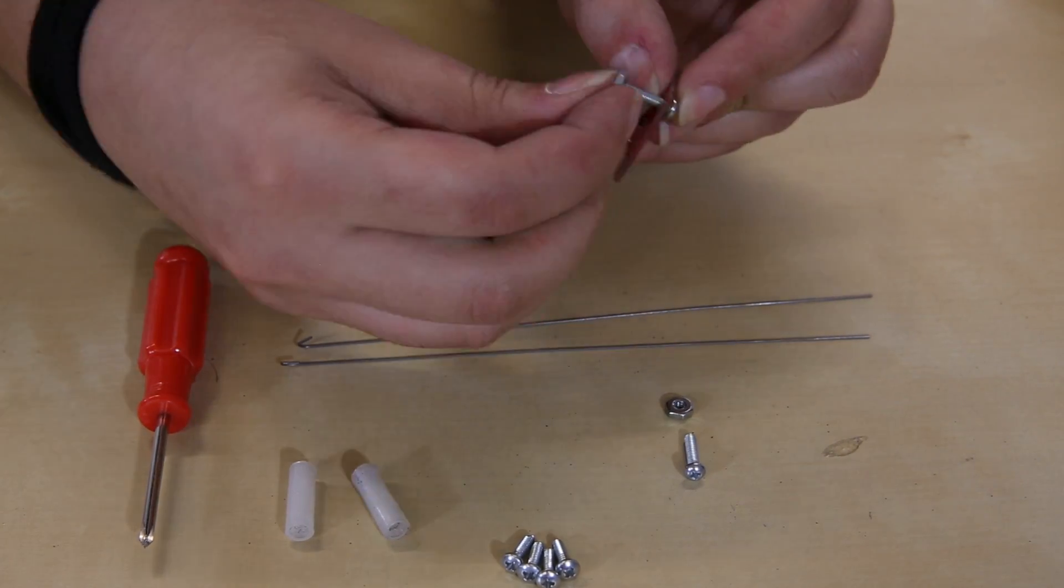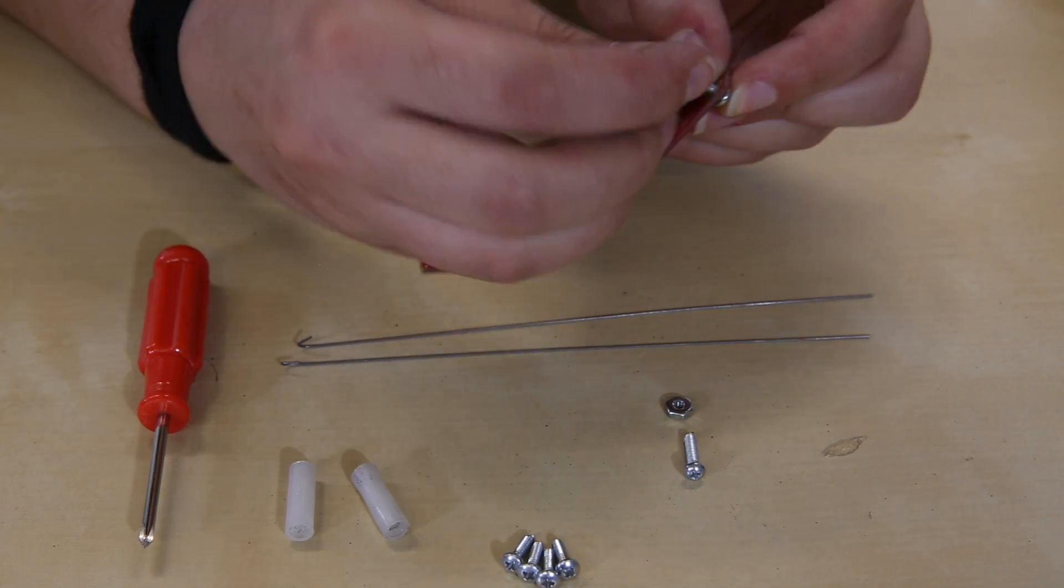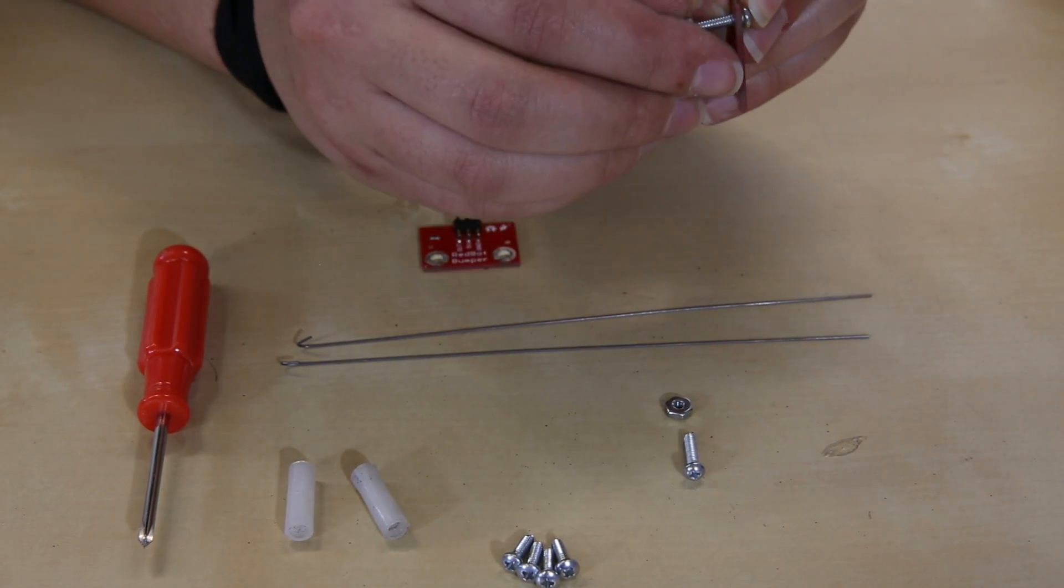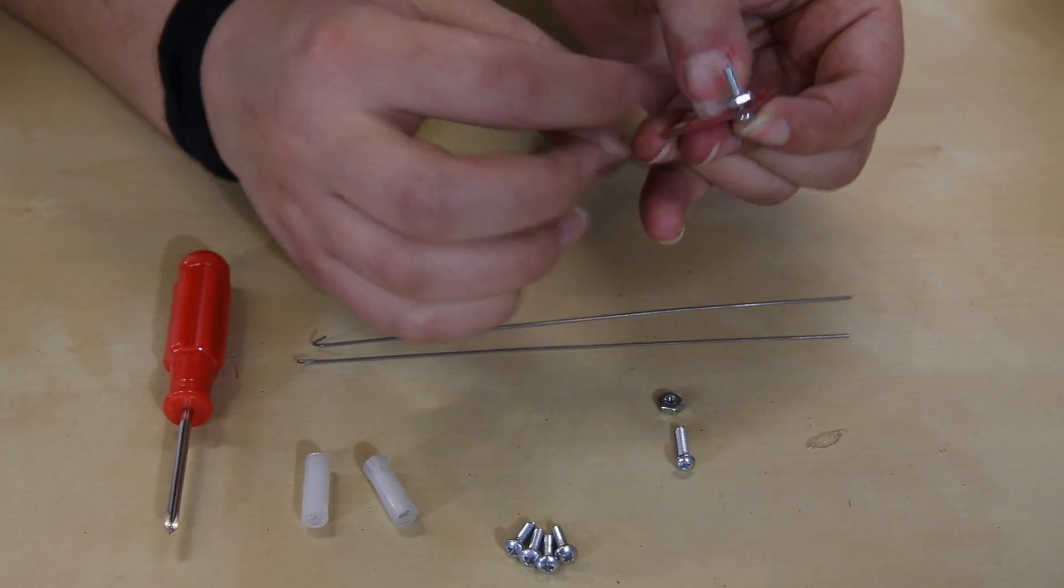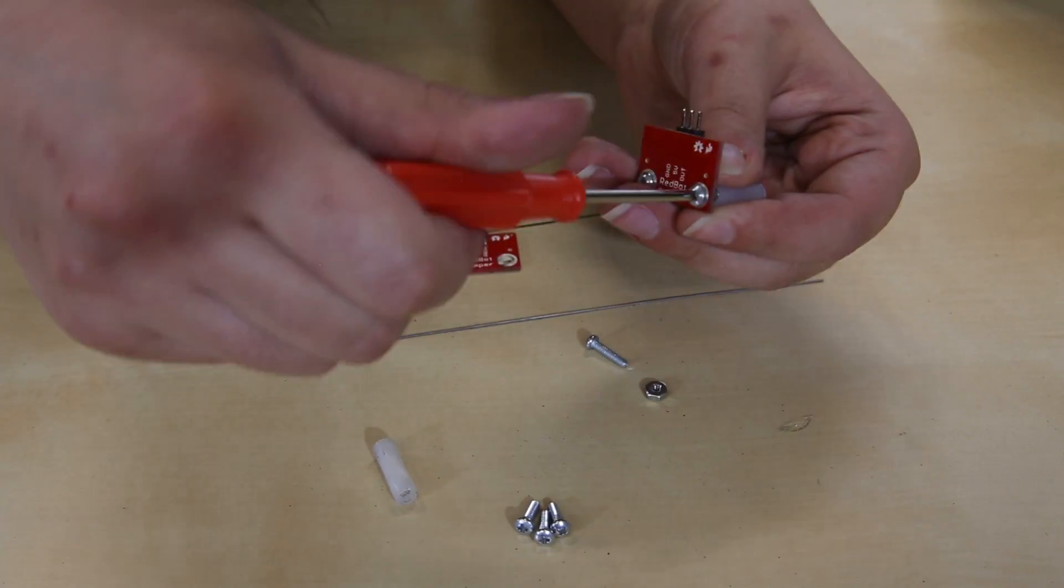Okay, so we're just going to screw these in. Your whiskers, you're going to want to bend them. You can do that in the little tiny hole in the side of the board.